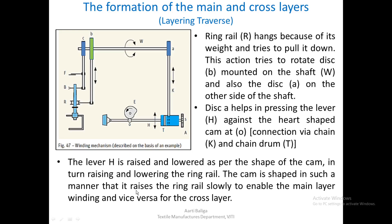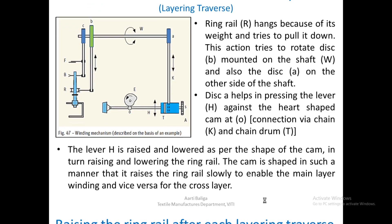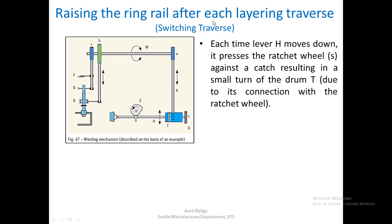The cam receives continuous speed from the motor and rotates at a certain speed. Because of its shape, it pushes lever H according to its design. The cam is shaped such that it raises the ring rail slowly — because we want the ring rail to move slowly to wind the main layer — and moves it rapidly in the other direction, enabling the winding of the cross layer by rapid downward movement of the ring rail.